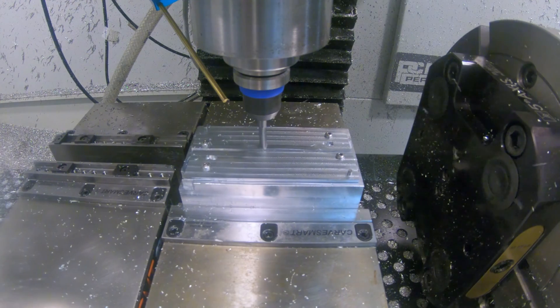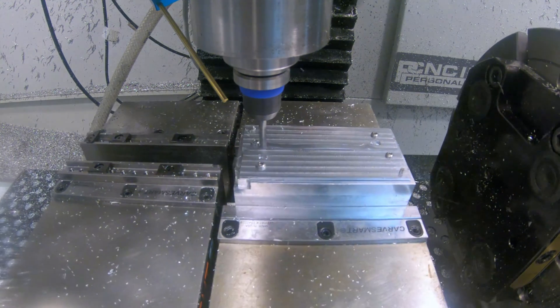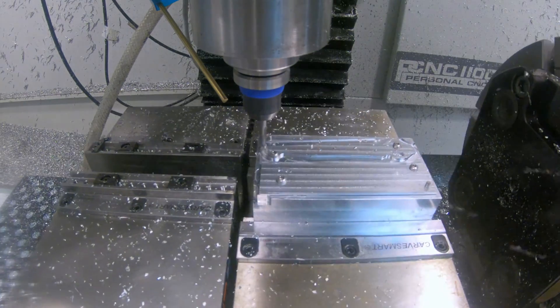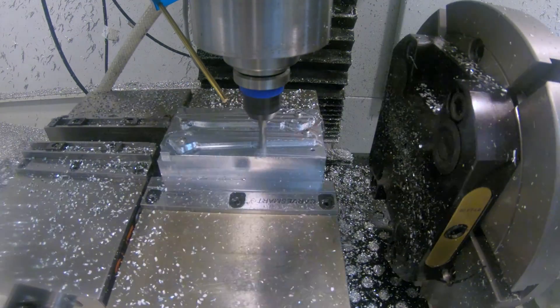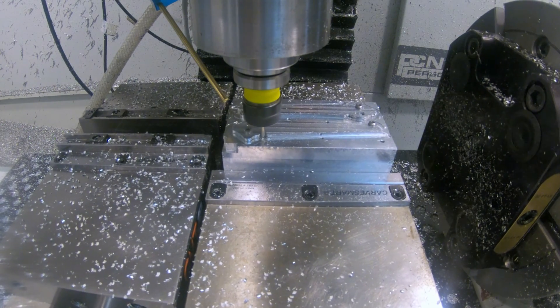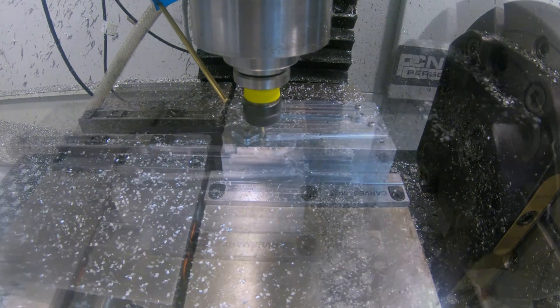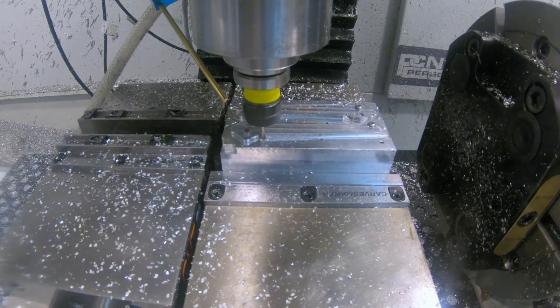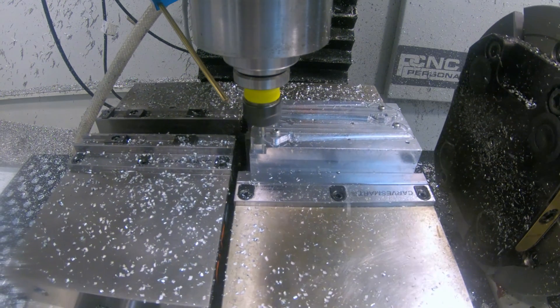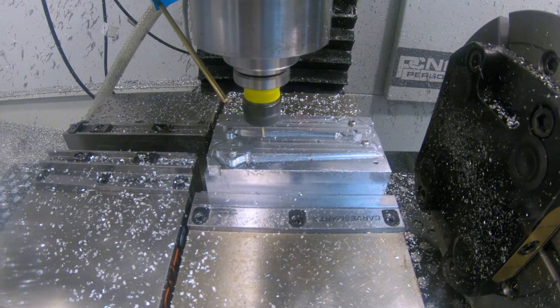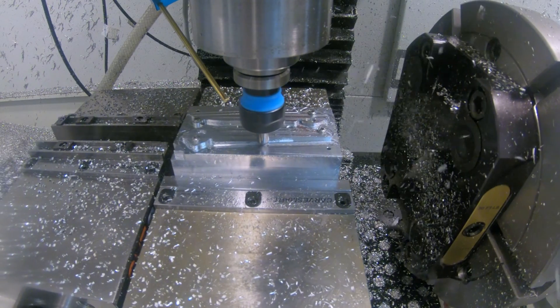I can then pin the blade in place and machine the outside. I need a way to hold down the tip of the blade so I added a tab. And this time I machined the bevel on the blade.